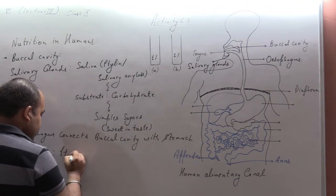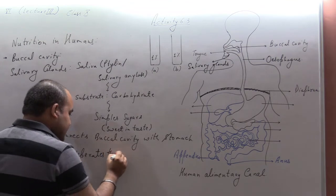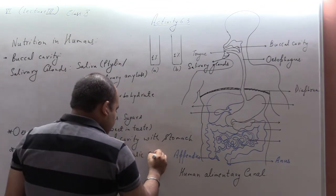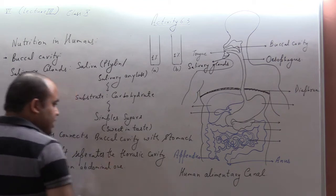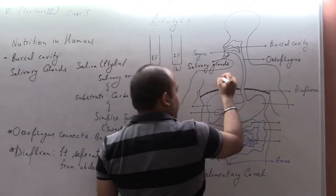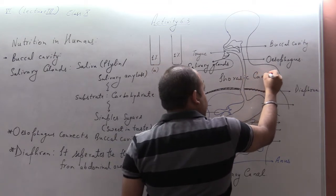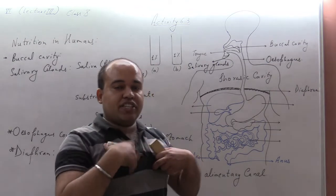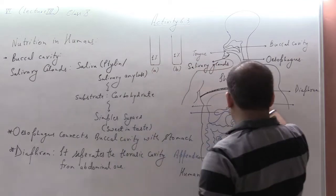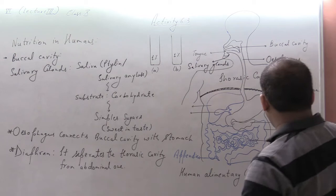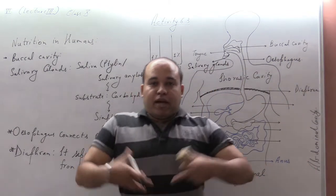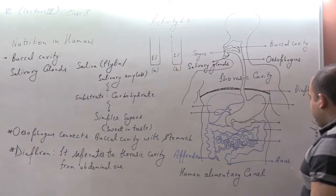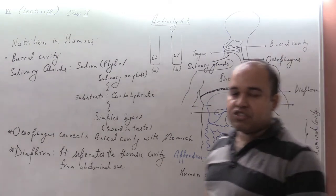The diaphragm separates the thoracic cavity from the abdominal cavity. Within the thoracic cavity, your lungs and heart are present. Below the diaphragm is the abdominal cavity, and all the digestive organs are present within the abdominal cavity.